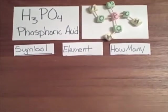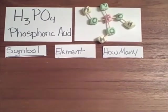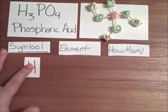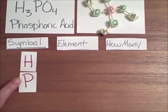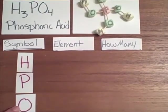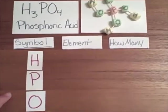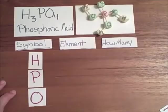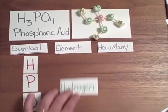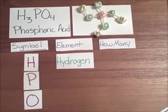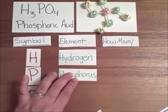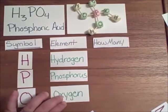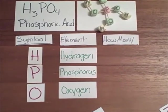How did you do? The symbols, you should have H, P, and O. I'm going to pull back a little bit. The H stands for hydrogen. The P stands for phosphorus, and the O stands for oxygen.